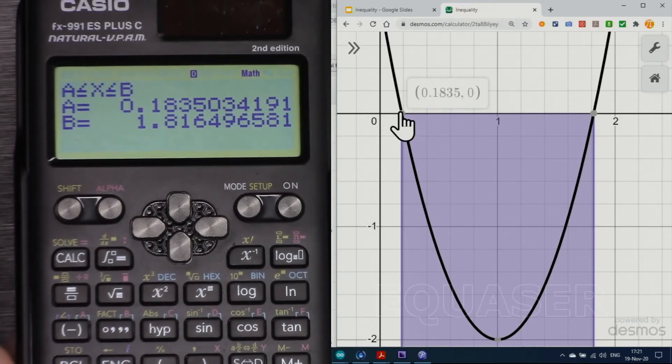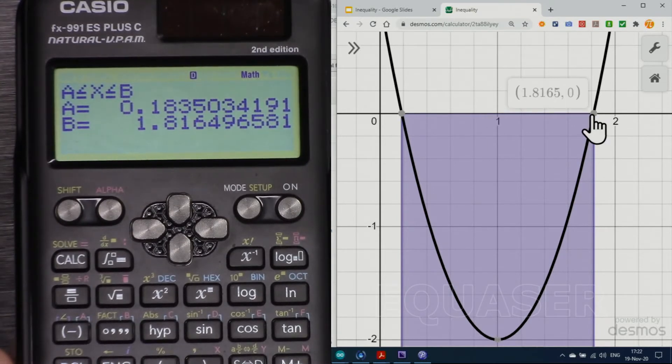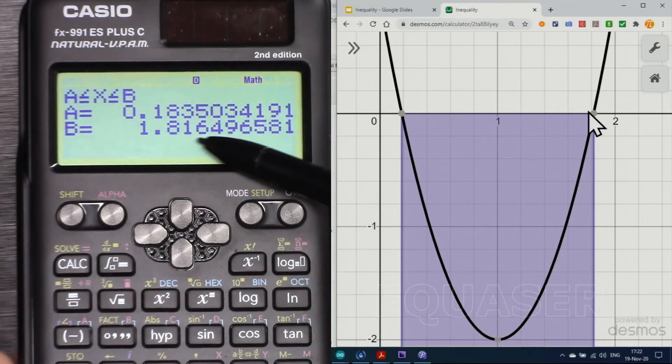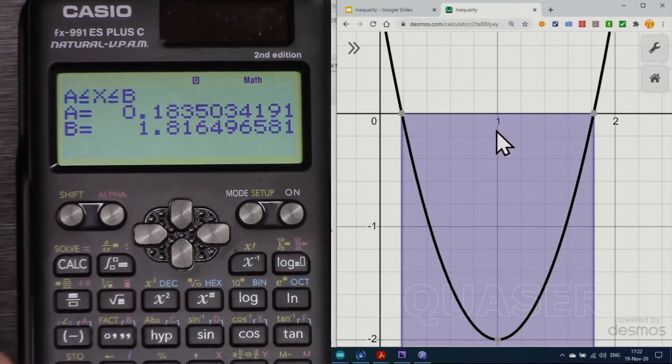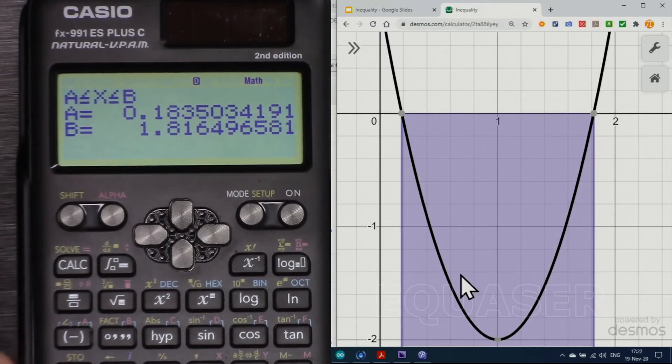And here as you can see, if I click here at this point, it says that when x is greater than 0.1835, and here, and when x is smaller than 1.816, our y is equal or smaller than 0 at this point.